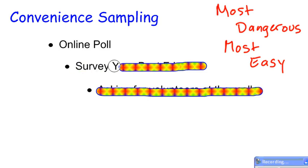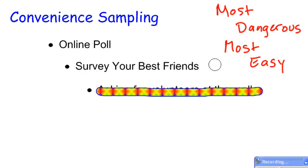Another type of convenience sampling is to just go around and survey your best friends, or survey everybody at your lunch table, or survey the people that live on just your street. It's convenient because it's easy to do. There's no system to it, and the reason why it's most dangerous is it might not give you a good representation of your population.